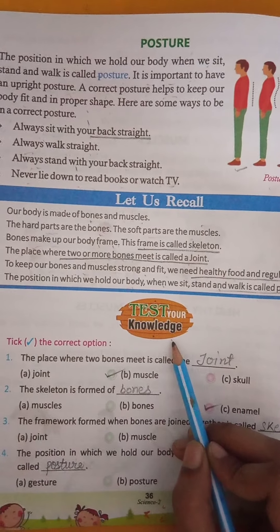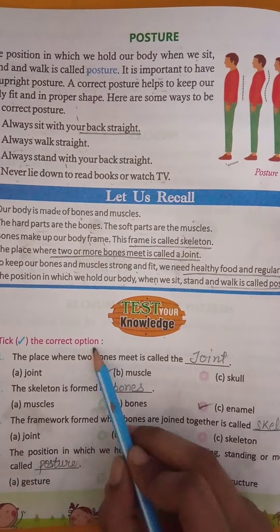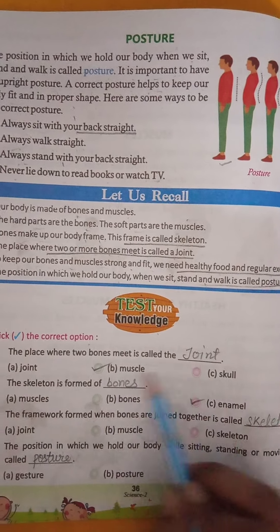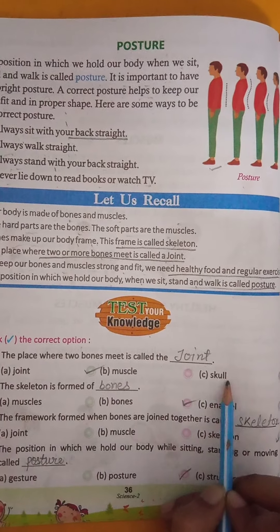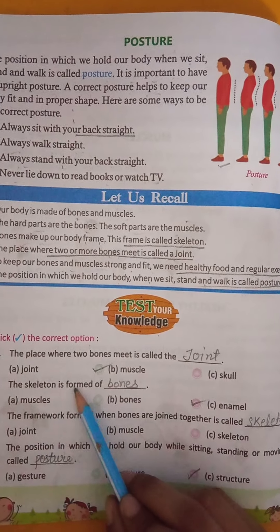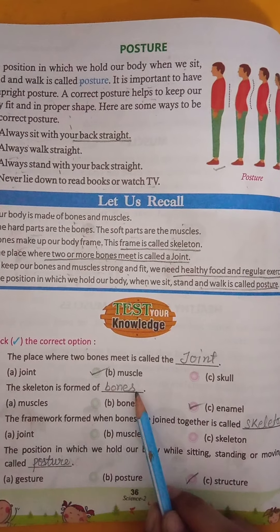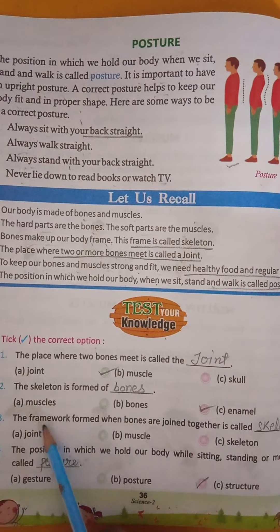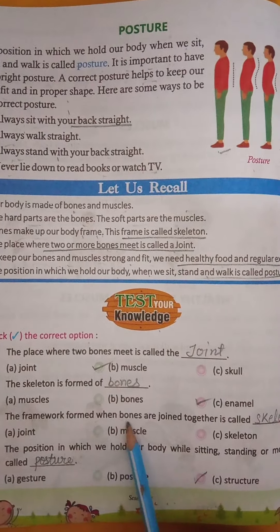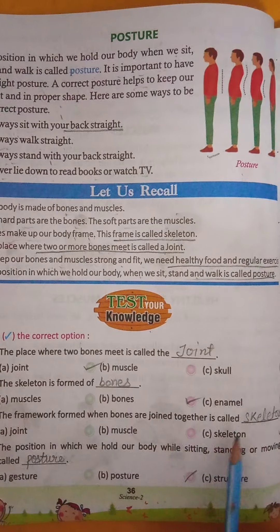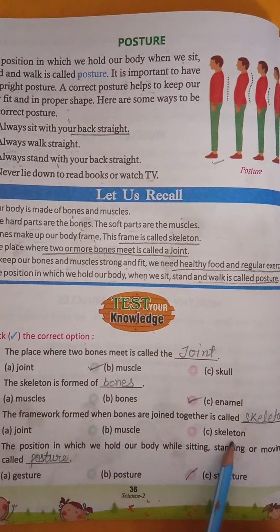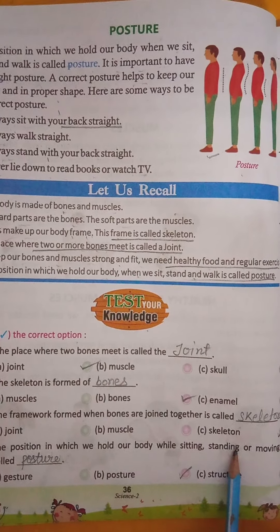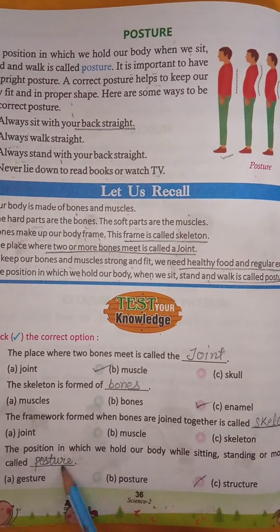Exercise time. Take the correct option. The place where two bones meet is called a joint. The skeleton is formed of bones. The framework formed when bones are joined together is called skeleton. The position in which we hold our body while sitting, standing or moving is called posture.